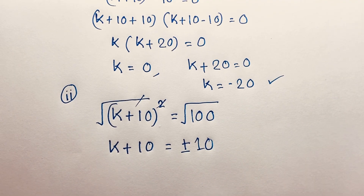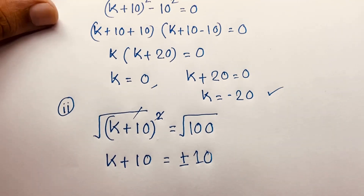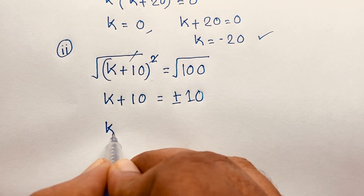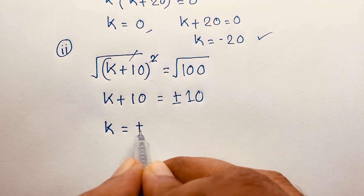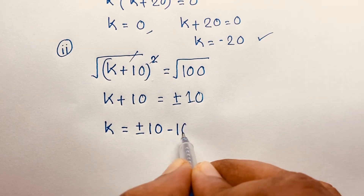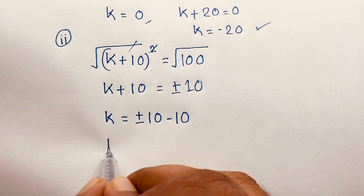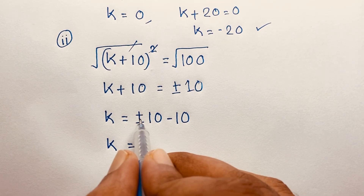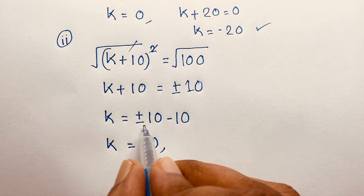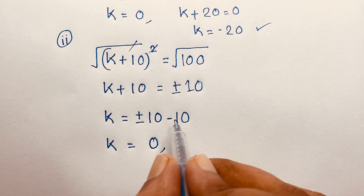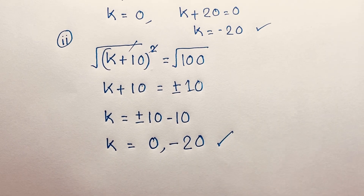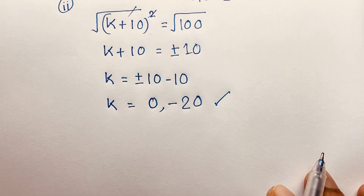I move 10 to this side, it will be negative. So k = ±10 - 10. If I take the positive value, +10 - 10 = 0. If I take negative 10, -10 - 10 = -20. So we find k = 0 and k = -20.